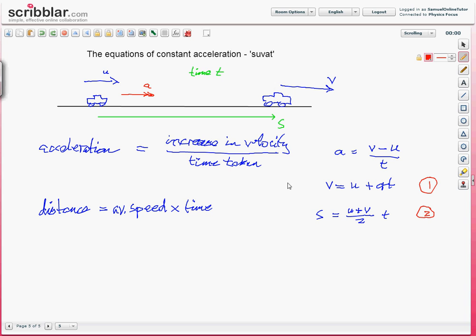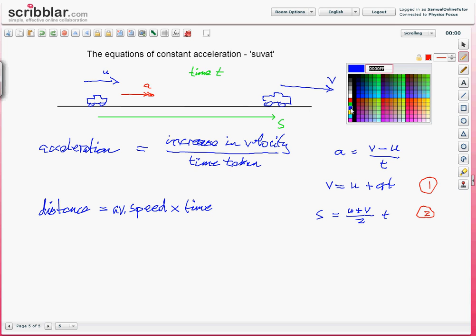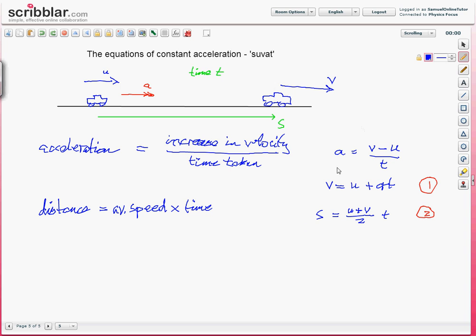Now, looking at these two, if we take the first equation v equals u plus at and substitute that in for v here in the second equation, we end up with s equals u plus v equals u plus at, so u plus at, multiplied by the t, all divided by 2.